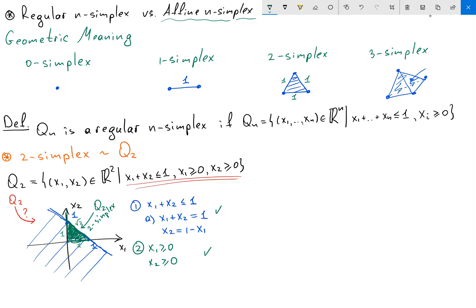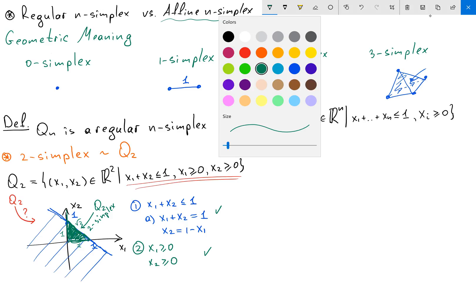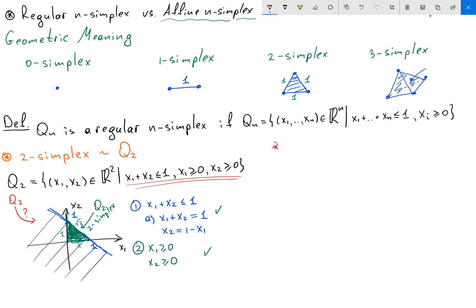So let's define and let's get the geometric intuition. For example, let's show an example based on two simplex. Before we have that n-simplex Q2 has the following form.